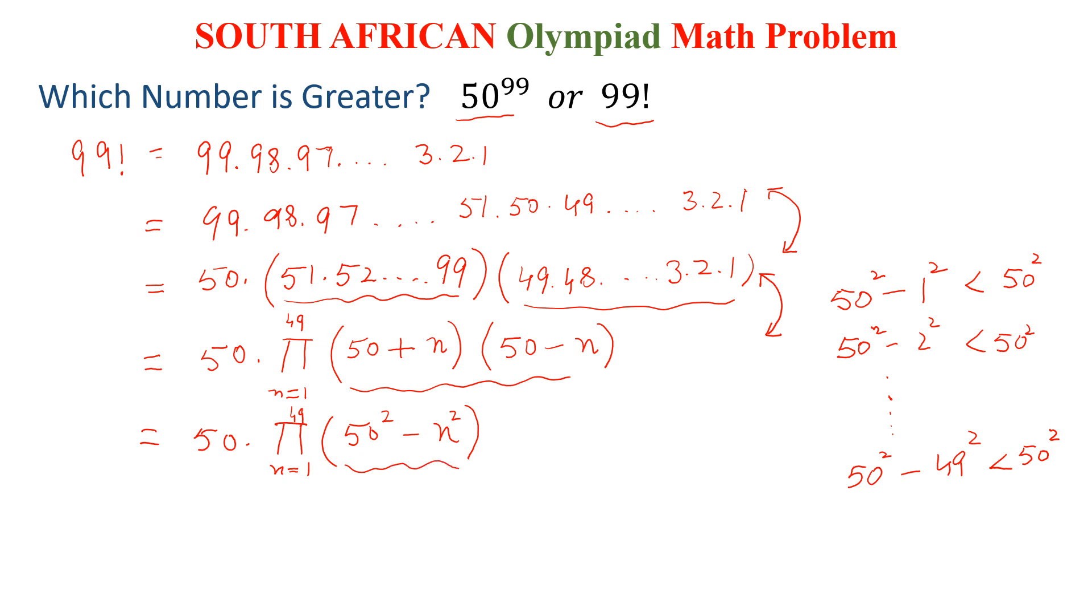So here, we can write that this step is less than 50, and n starts from 1 up to 49, 50 square. If we write this 50 square 49 times, this is equal to 50 into 49 times 50 square, so this is to the power 49.